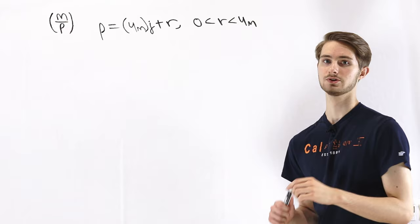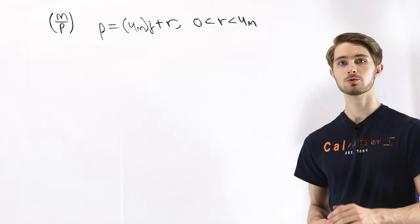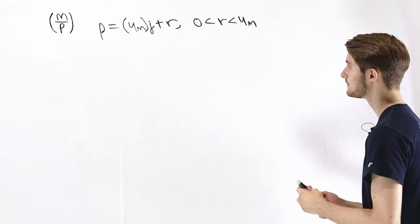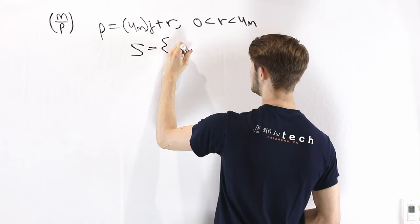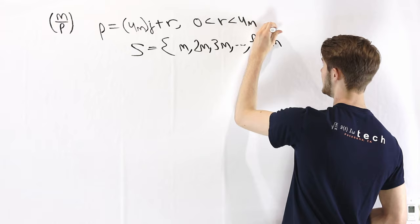To figure out whether m is a quadratic residue mod p, we're going to apply Gauss's Lemma. If you haven't seen that lemma before, there's a video in the description you can check out. To use Gauss's Lemma, we'll start by constructing the set S, which has elements m, 2m, 3m, and so on up to (p−1)/2 times m. As long as p is an odd prime, this is an integer, so the set makes sense.